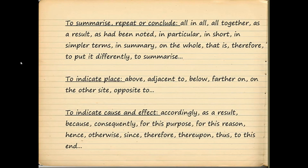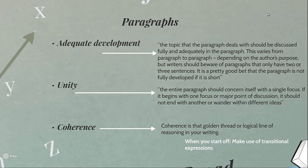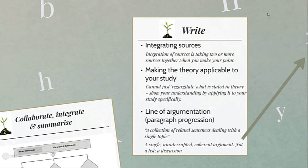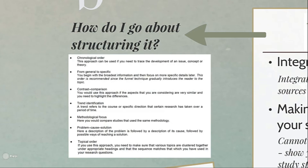Paragraphs have to show adequate development, unity, and coherence. Now let's look at the structure of your literature review. Tutorial Letter 101 gives you a few ideas: you can structure it chronologically, from the general to the specific, by contrast comparison, trend identification, methodological focus, problem-cause-solution, or topical order. Although any of these might be potentially suitable, the first two and the last one — chronological, general to specific, and topical order — are used most often at honors level.